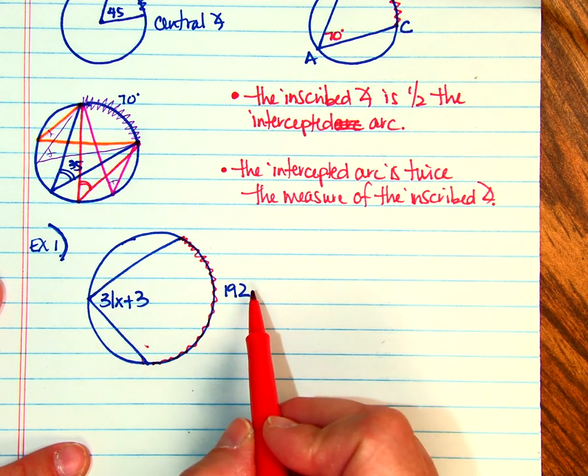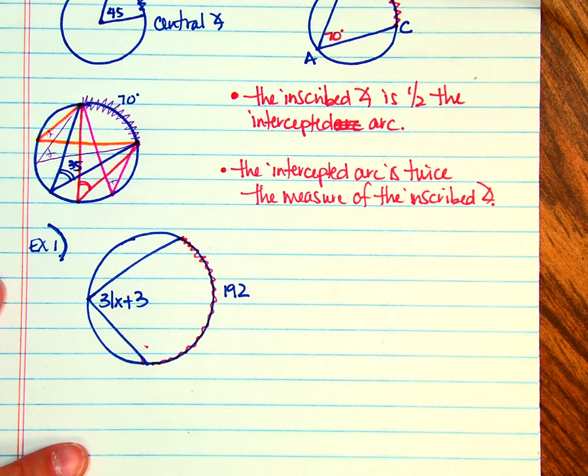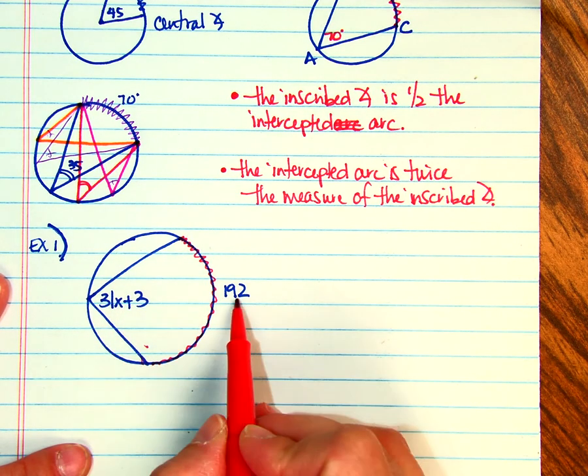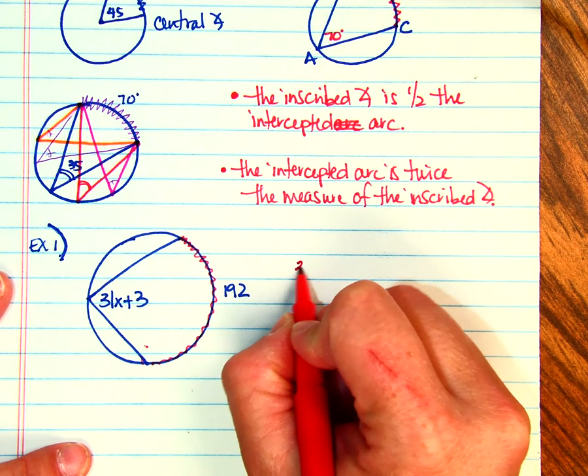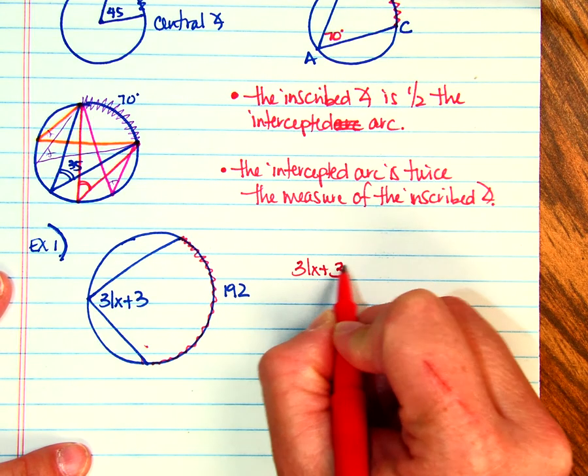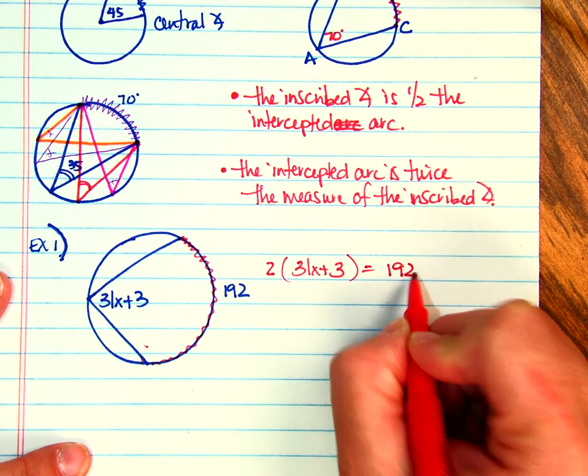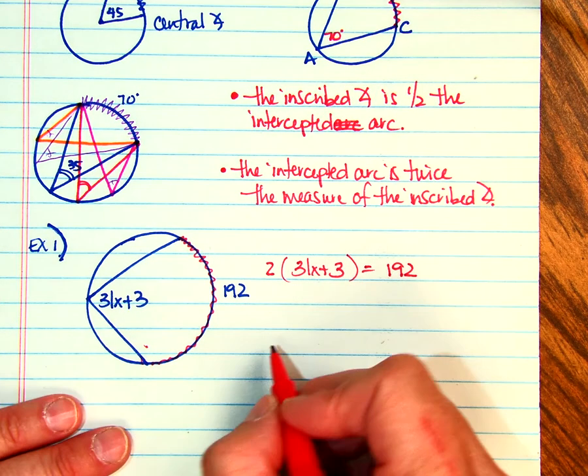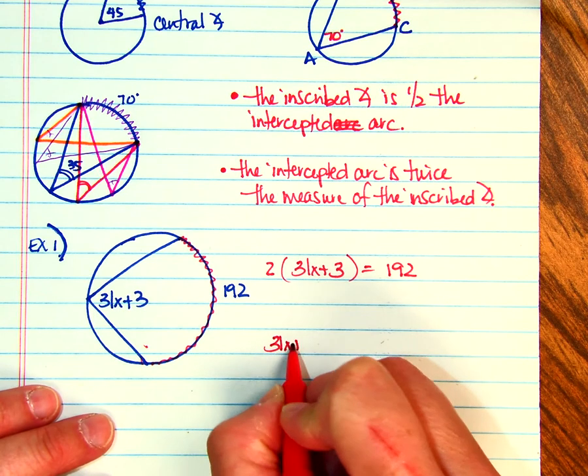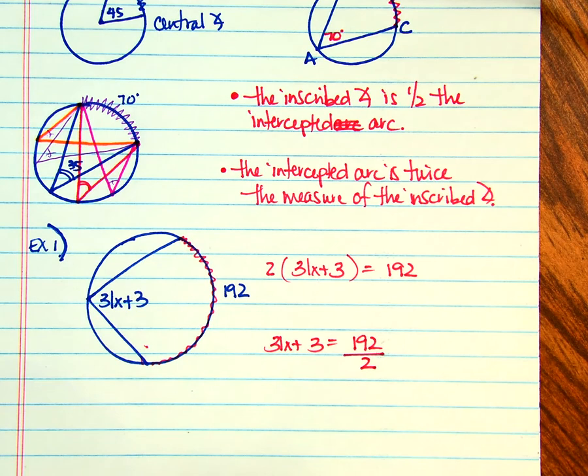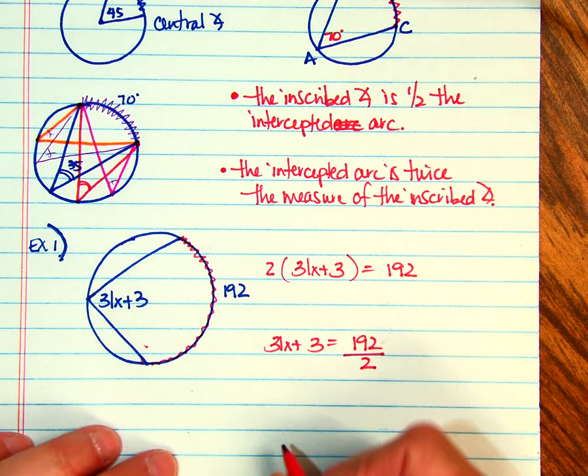So if these were central angles, they would be equal. But now I know that two of these equals that. So you could set it up as 31x plus 3, two of those equals 192. Or you could set it up and divide 192 by 2. So either way, whichever one is easiest for you. I'm going to go ahead and stop this video.